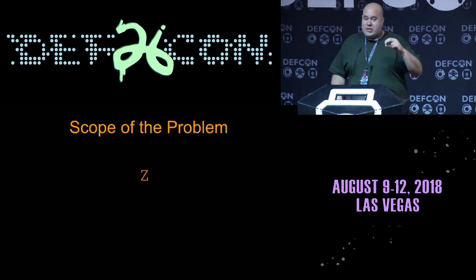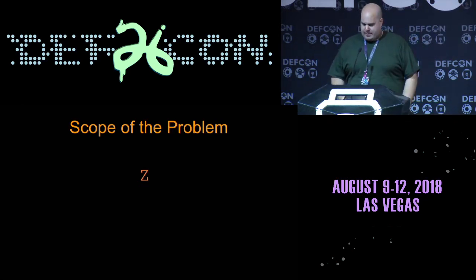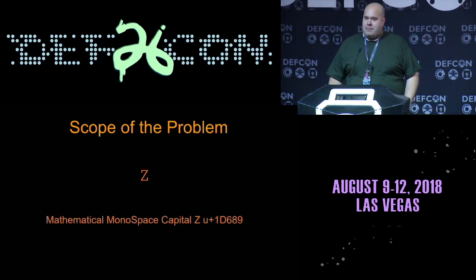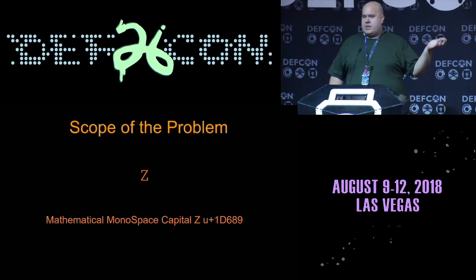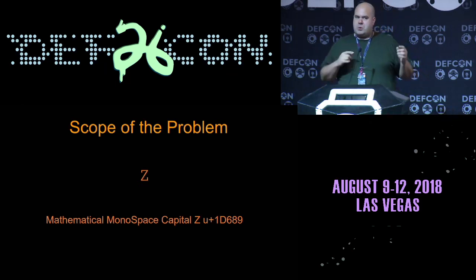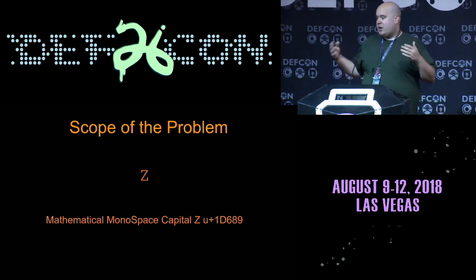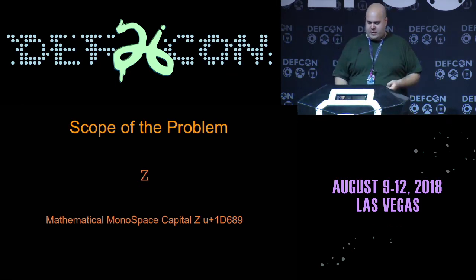There are also times where the same character is actually duplicated in the Unicode spec. This is a capital Z, but it's not the ASCII capital Z you're used to — it's the mathematical monospace capital Z. There's also a regular monospace capital Z that's not mathematical. If you're a font creator with three, four, or five different capital Z's, do you make different glyphs for each? No — you mostly just render them the same, because it saves time and space in the font.